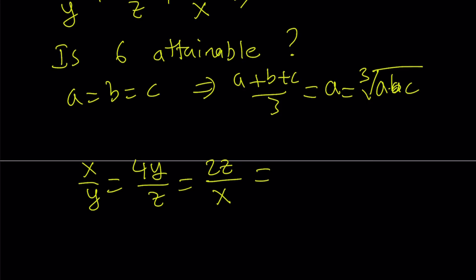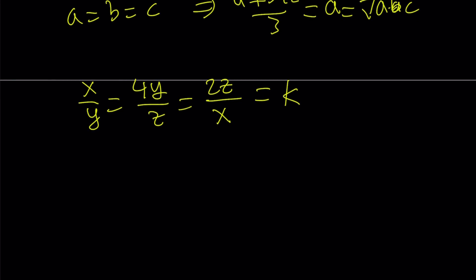In order for this to happen, I'm going to solve this as a proportion problem. Set all of them equal to k, where k is a constant. Obviously, k is different from 0. This means x can be written as ky, and y can be written as kz over 4, and z can be written as kx over 2.